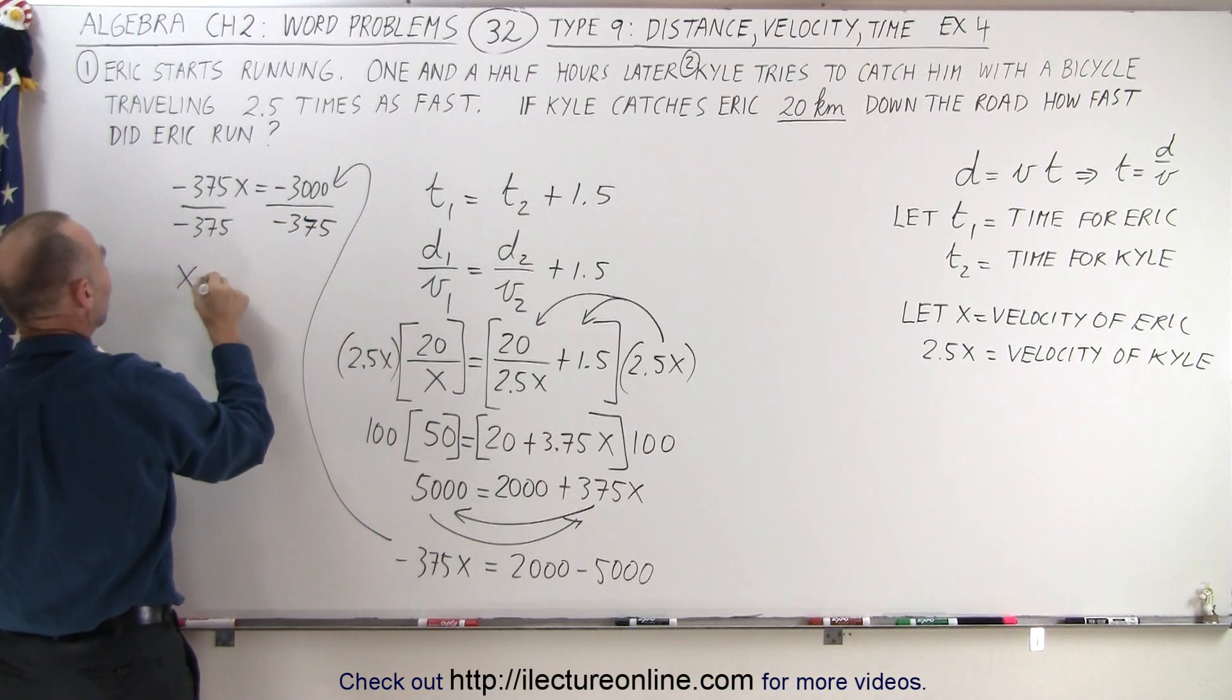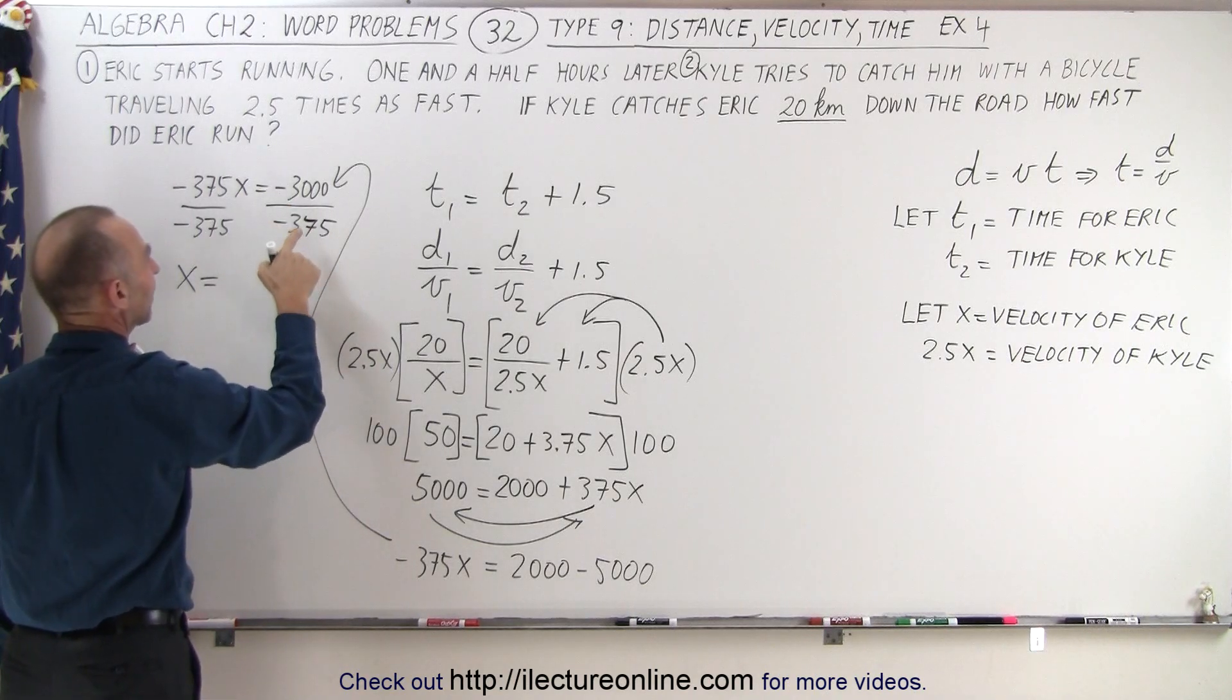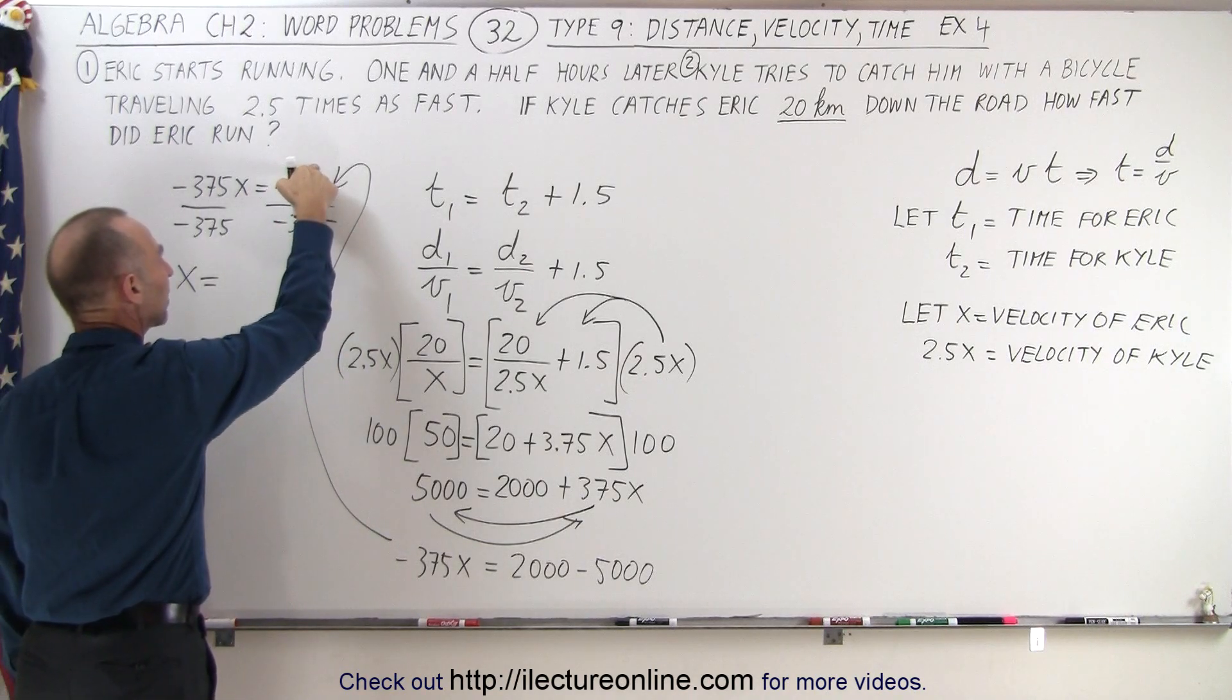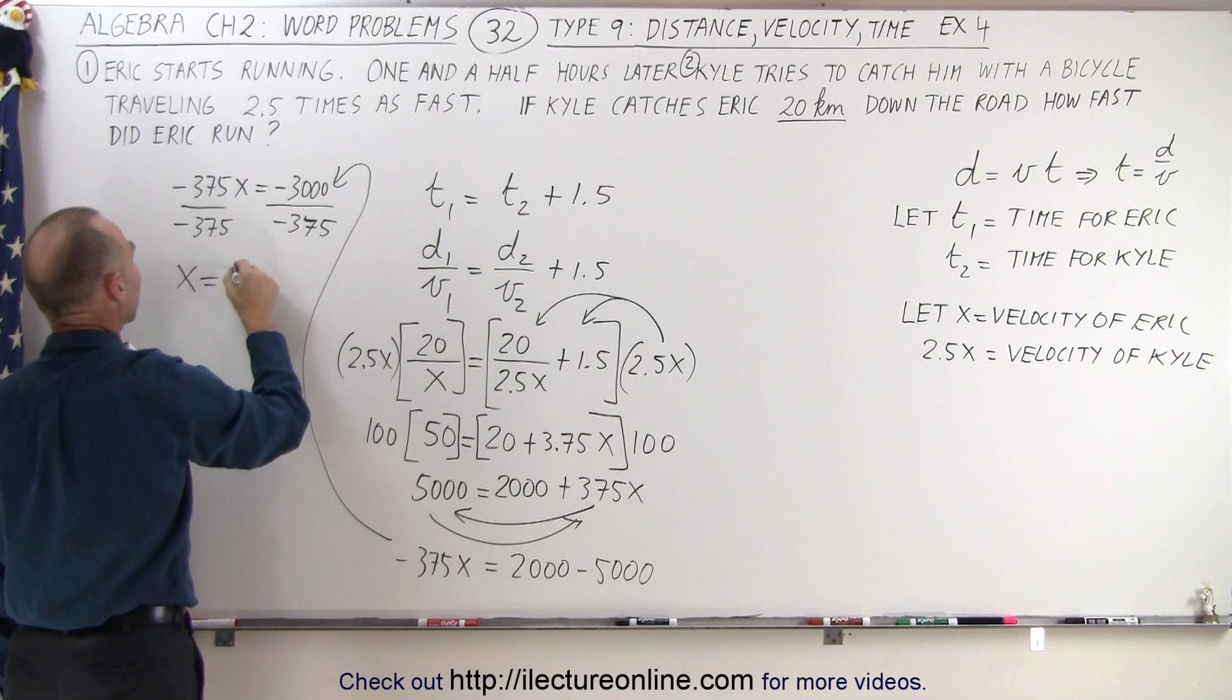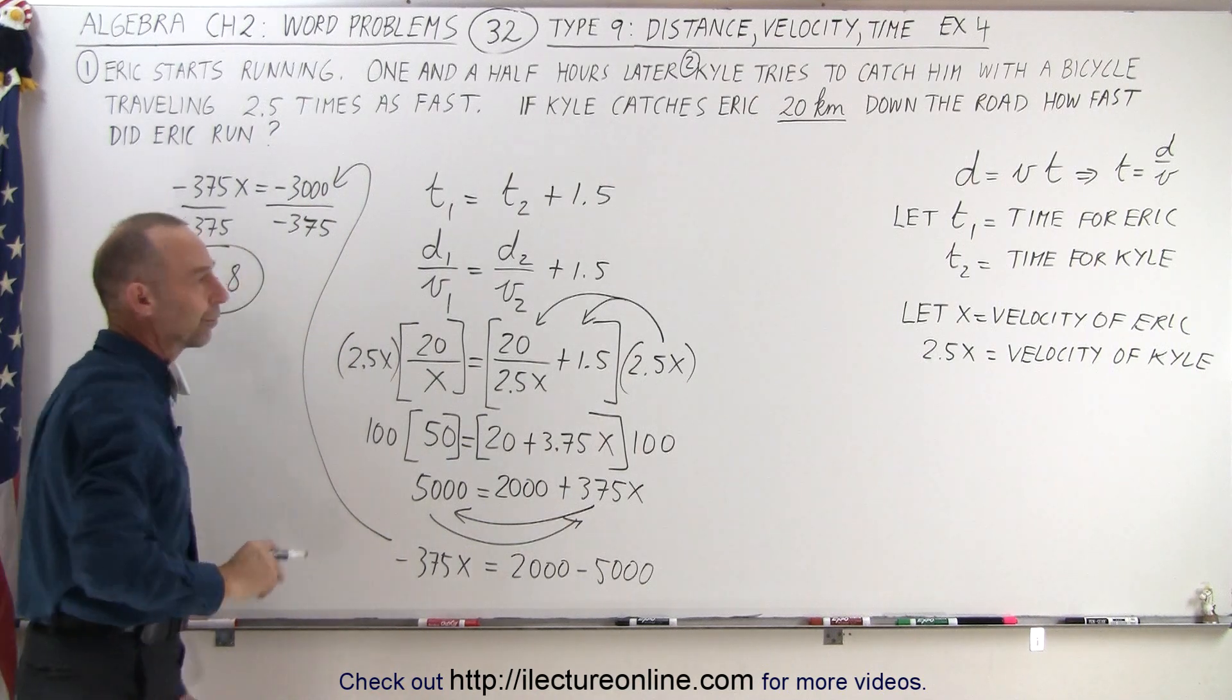which gives us x is equal to—the negatives cancel out—and 375 goes into 3,000, that would be 8 times. So x equals 8.